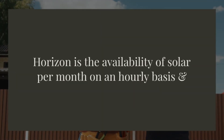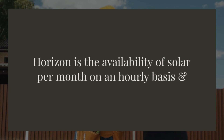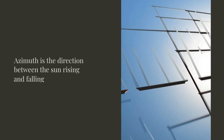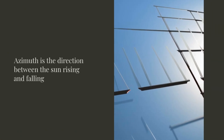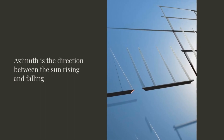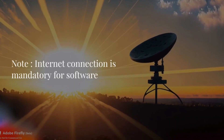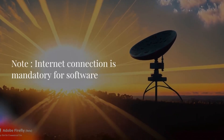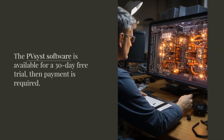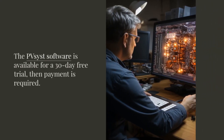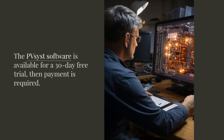Horizon refers to the availability of solar energy per month on an hourly basis, and azimuth is the direction between the sun rising and falling. Note that an internet connection is mandatory for the software. PVsyst is available for a 30-day free trial, after which payment is required.